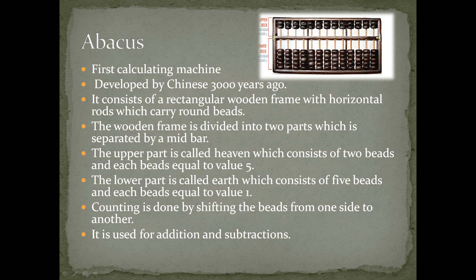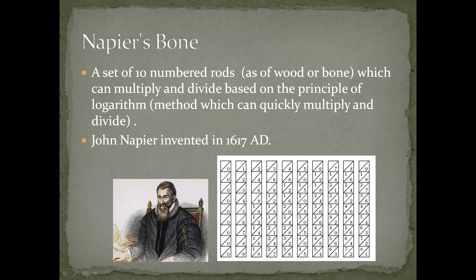The upper part is called heaven, which consists of two beads and each bead equals a value of five. The lower part is called earth, which consists of five beads and each bead equals a value of one. Counting is done by shifting the beads from one side to another. It is used for addition and subtraction.